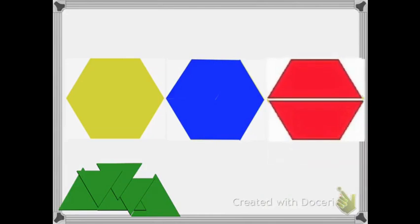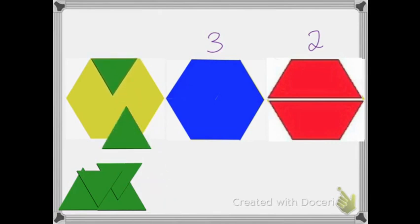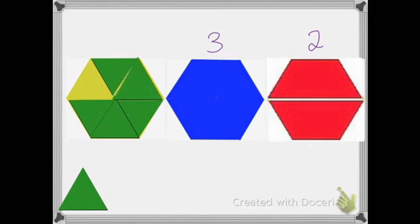And as you know from the slide before, it takes two equal sized trapezoids. Let's see about the triangles. How many equal sized triangles will it take to cover the yellow hexagon? Well, we have one, two, three, four, five, and one more makes six.